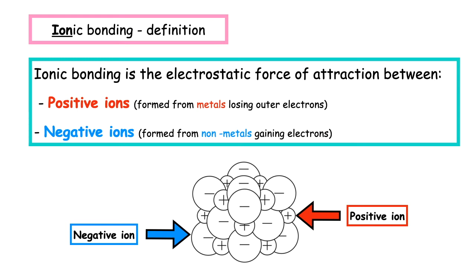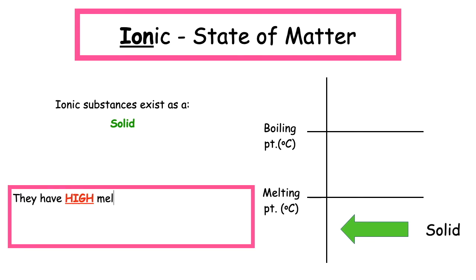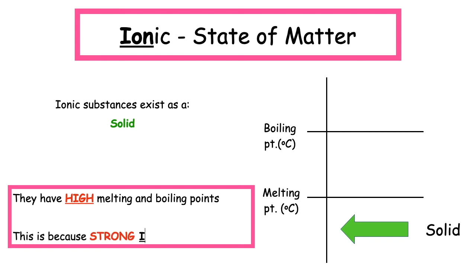We can see from this diagram here, which represents an ionic substance, that we have positive ions and negative ions. They are held together in a huge ionic lattice. Ionic substances always exist as solids.